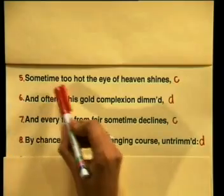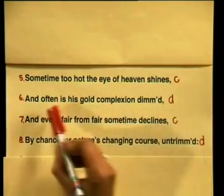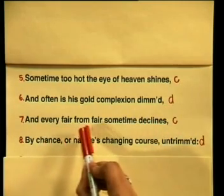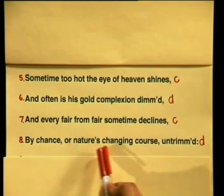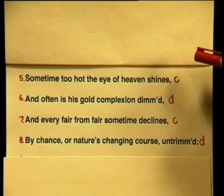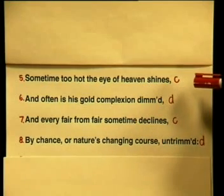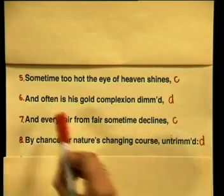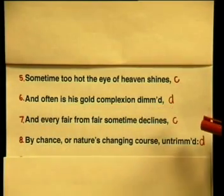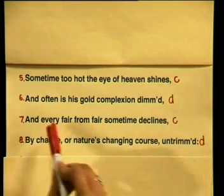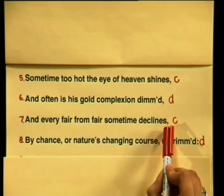Now let's look at the meaning of the second quatrain, where this problem is discussed further. Here Shakespeare says that summer is often too hot, the sun or the eye of heaven is too bright, and there are overcast days in summer — 'Often is his gold complexion dimmed.' And summer's beauty is temporary, it doesn't last — 'Every fair from fair sometime declines.' So in the second quatrain he discusses this issue further and gives more examples of why maybe it's not a good idea.